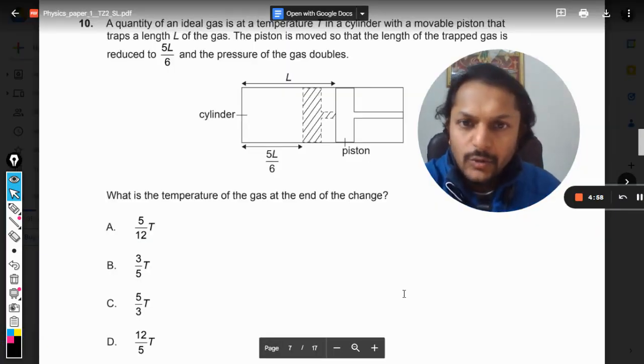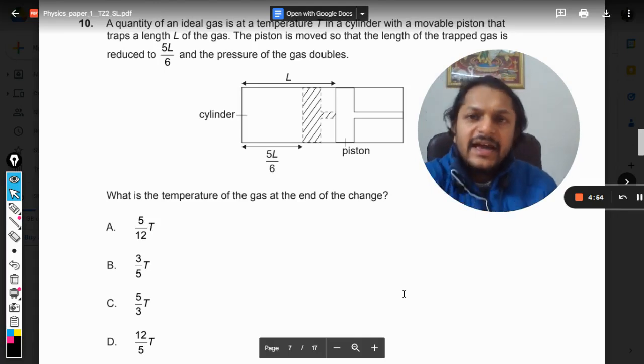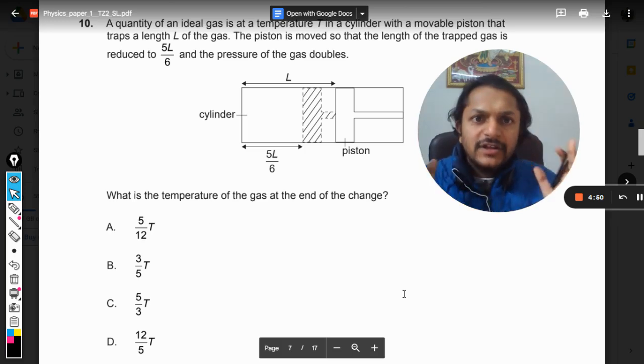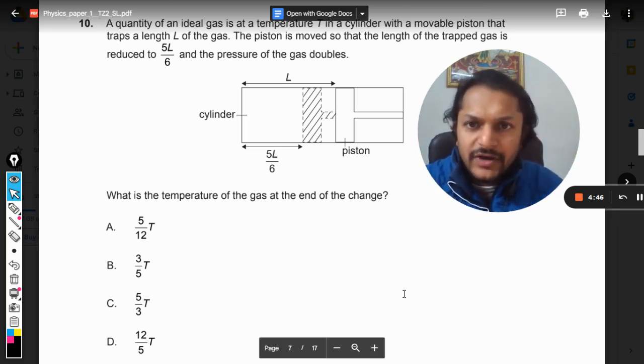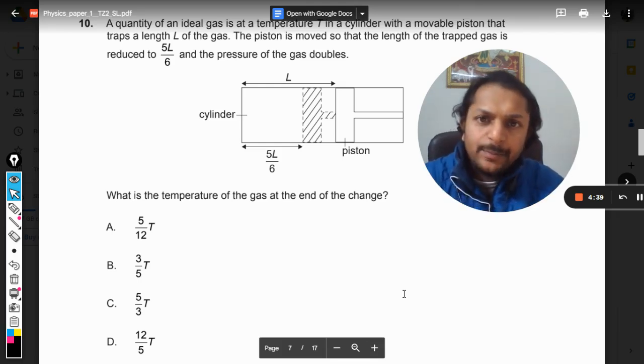Okay dear students, let us see how to do this question. A quantity of an ideal gas is at temperature capital T in a cylinder with a movable piston that traps a length L of the gas. The piston is moved so that the length of the trapped gas is reduced to 5L by 6 and the pressure of the gas doubles.